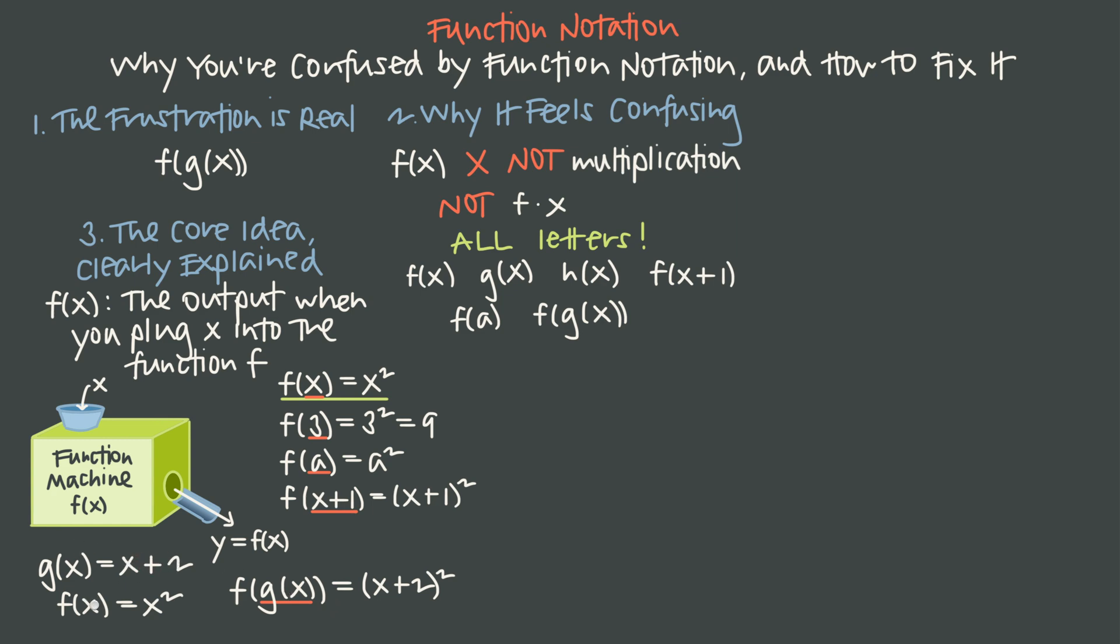and we put it in to f. That means that everywhere inside f, we replace x with x plus 2. And so instead of x squared, we get x plus 2 quantity squared because we replaced this x right here with this x plus 2. And so the composition f of g of x is x plus 2 quantity squared.